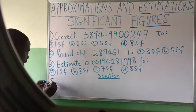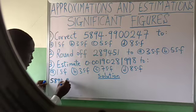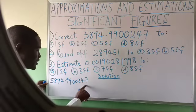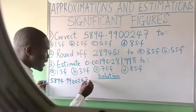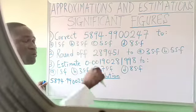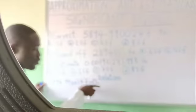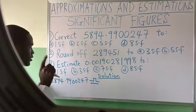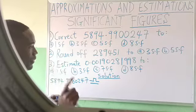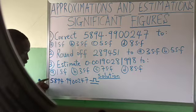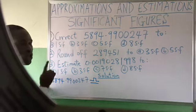Let's see an example. In question number 1: 15894.9900247. Before you approximate this number to any significant figure, it is important that you write your sign of approximation. This sign must be written — it tells anyone who sees what you wrote that you are dealing with approximation. Now, the number that is not zero is 5. It means that it is from 5 that non-zero numbers start.